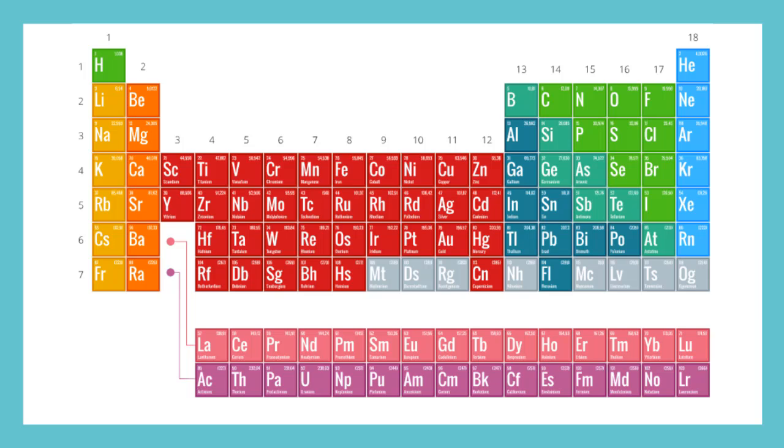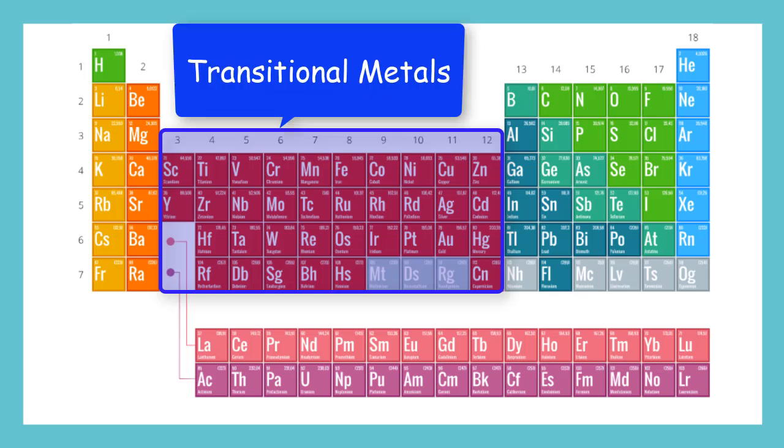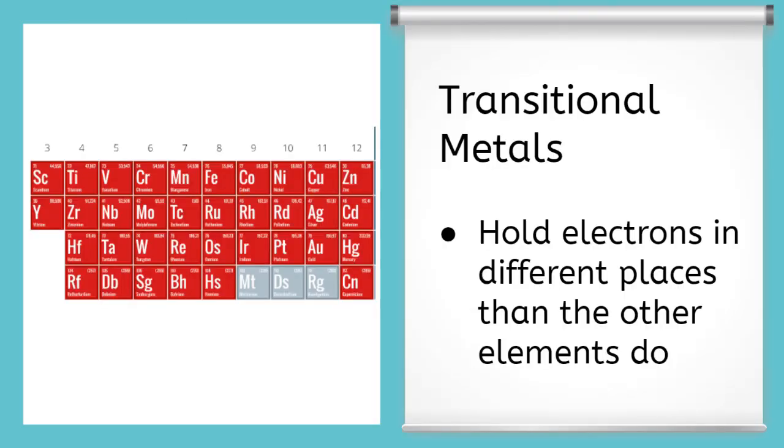Now we are going to look at the biggest set of elements on the table. All of these red boxes here that stretch from group 3 to group 12 are called the transitional metals. The transitional metals are metals, just like the alkali and alkaline earth metals. But the metals in group 3 to group 12 hold their electrons differently than any other elements on the table. And that is why they are called transitional.